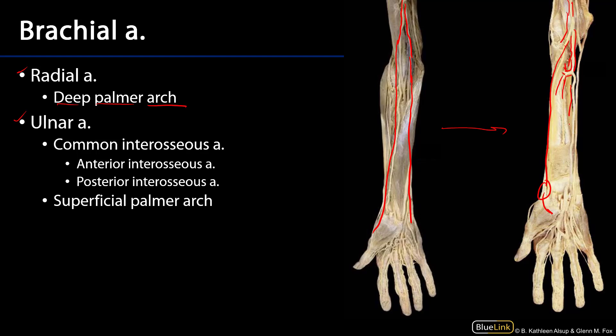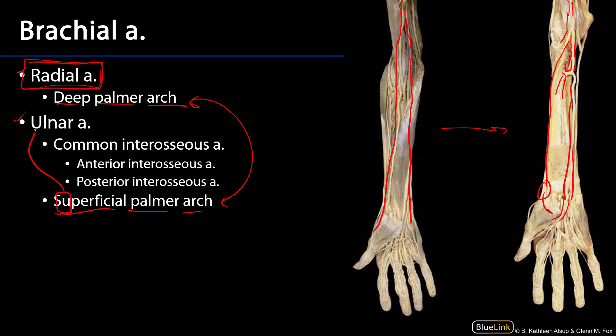When the ulnar artery reaches the hand, it gives rise to the superficial palmar arterial arch. The deep and superficial palmar arterial arches very frequently anastomose. When there is good collateral blood flow through these anastomoses, that frees up the radial artery for harvesting or cannulation for various cardiac procedures. A helpful mnemonic: the ulnar artery gives rise to the superficial palmar arch because 'superficial' has a U in it — U is for ulnar.